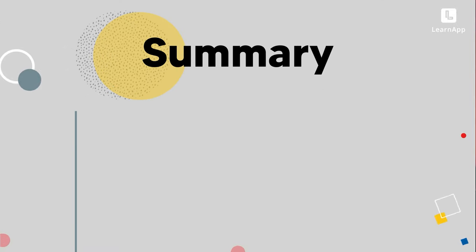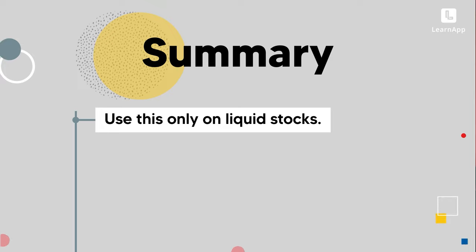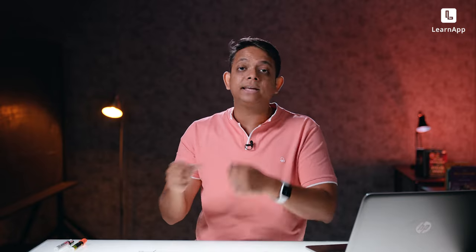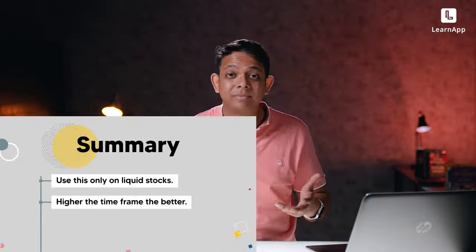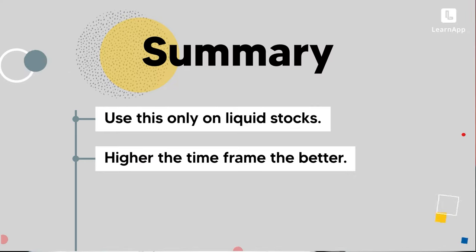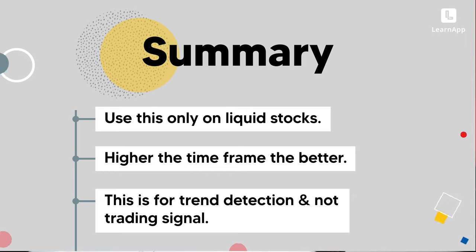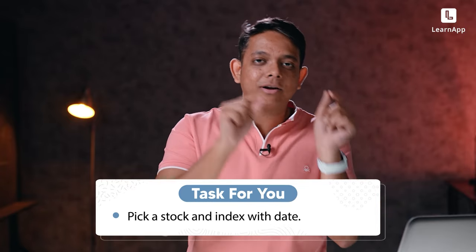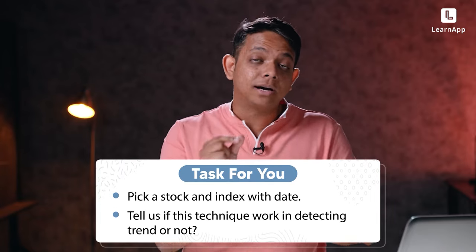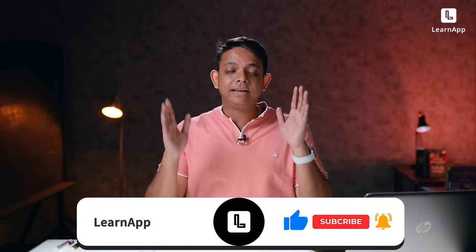Here's a summary: make sure you use this only on liquid stocks — top 100 companies only. Preferably use this only on the Nifty index to detect a trend. Don't use it for buy and sell signals — it's just a good way to know whether there's going to be a short-term rally. Higher the time frame, the better. On a 5–10 minute chart, it personally doesn't work well, but on a daily, weekly, or monthly chart, it's even better. This is a trend detection system, not a trading system. Pick a stock or an index, test this technique, and share whether it worked in detecting the trend. If you have any questions, put them in the comments below and don't forget to subscribe to LearnApp.